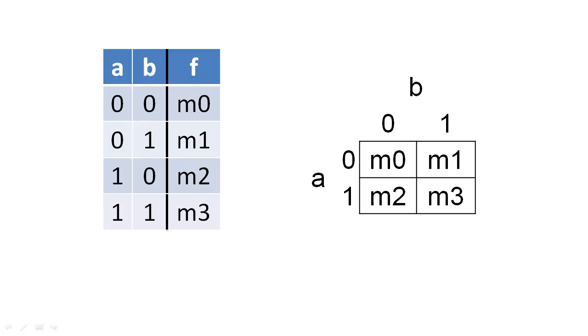For example, the top left corner of the K-map corresponds to minterm 0, which relates to the inputs of a equal to 0 and b equal to 0. Just like a truth table, we can derive a Boolean expression directly from the K-map.